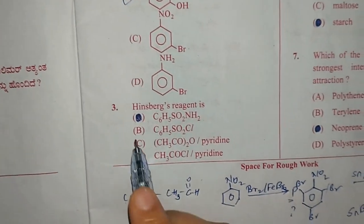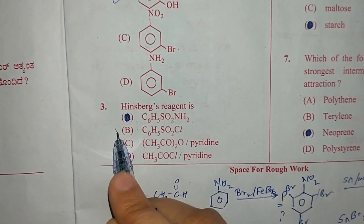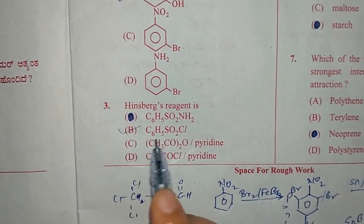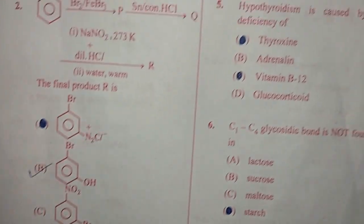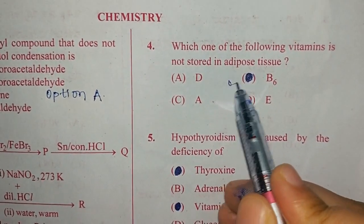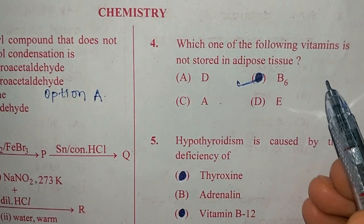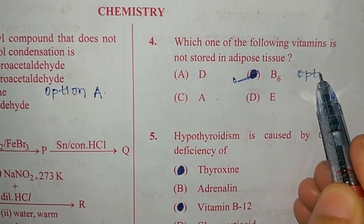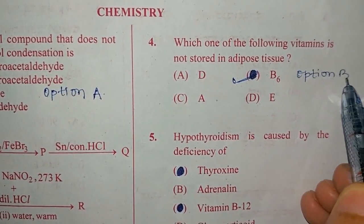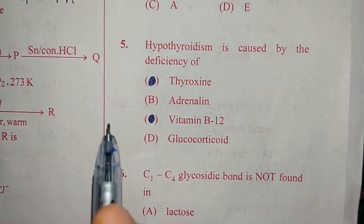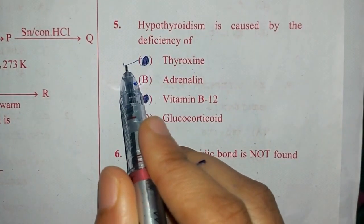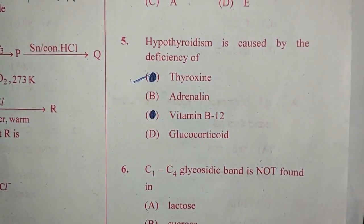Hinsberg reagent is benzene sulfonyl chloride, C6H5SO2Cl, option B. Which one of the following vitamins is not stored in adipose tissue? It is B6, option B. Hyperthyroidism is caused by the deficiency of thyroxin, option A.